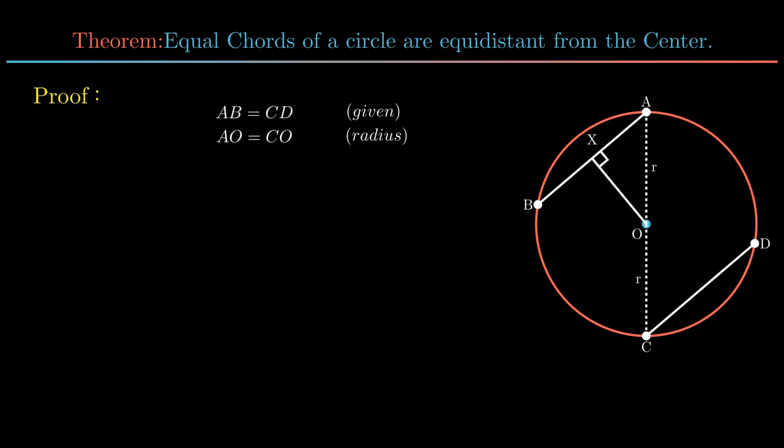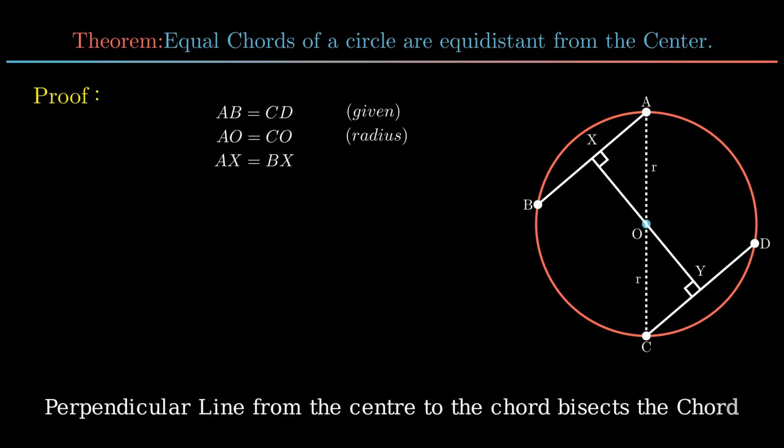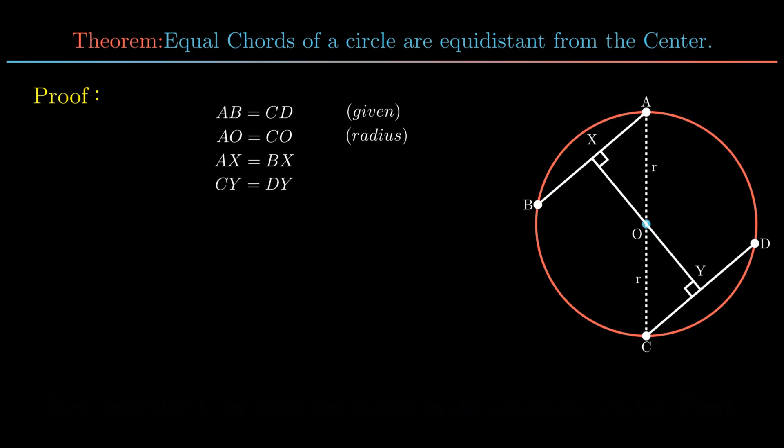Construct perpendicular OX on chord AB and OY on chord CD bisecting the chords. Therefore AB can be expressed as twice of AX and CD can be expressed as twice of CY.